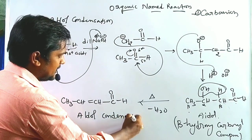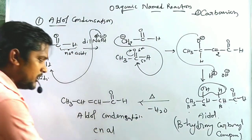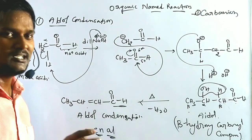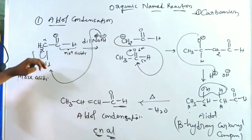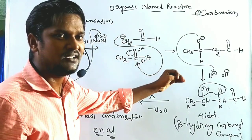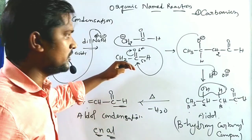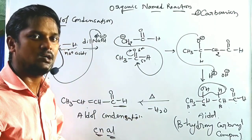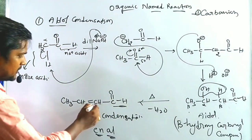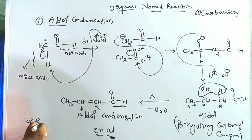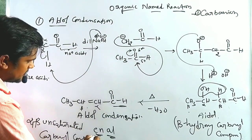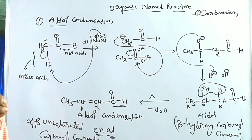The product formed is called an enol — 'al' refers to aldehyde and 'en' refers to the double bond. The total reaction is called aldol condensation: a carbonyl compound with acidic alpha protons treated with diluted NaOH undergoes nucleophilic addition to give an oxyanion, which is protonated to form the aldol. Further heating converts the aldol into an alpha,beta-unsaturated carbonyl compound.